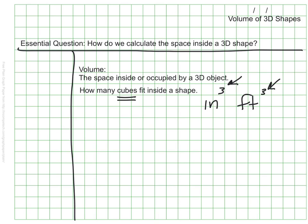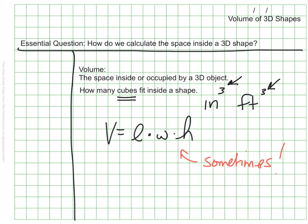Now some of us may be thinking: I know how to find volume — my teacher last year taught me to multiply the length times the width times the height. And that's true sometimes, but not always. That works with a particular type of object, but not every object. So instead of using length times width times height, I think there's a better way to think about volume.